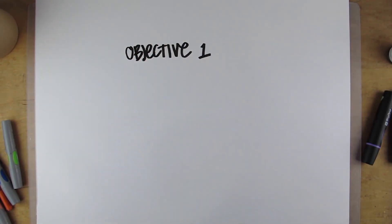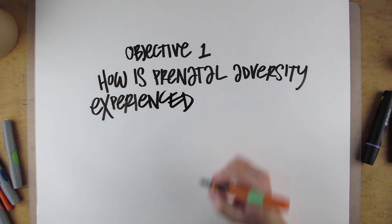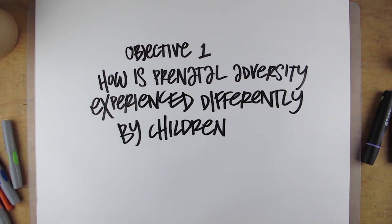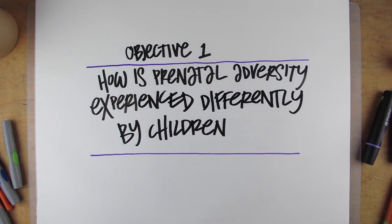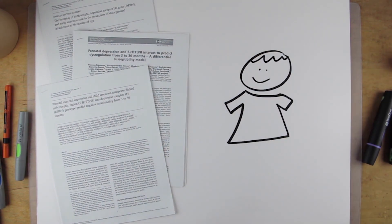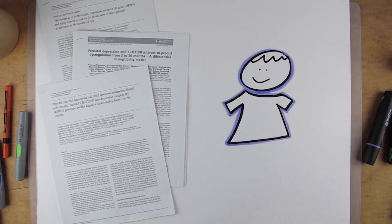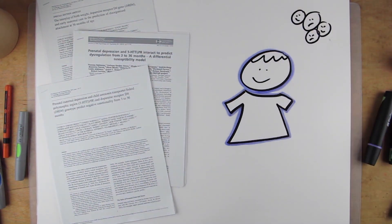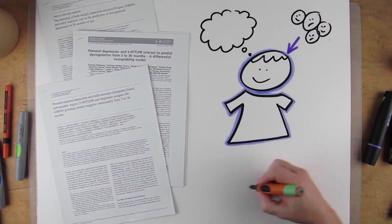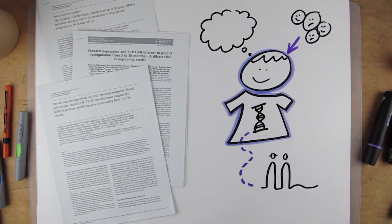The first one is to understand how is prenatal adversity experienced differently as a function of factors that reside in the child, such as their biology, their genetics. For example, in the MAVEN, a study following children from pregnancy to adolescence, it was found that stress during pregnancy influences the child's temperament, attention, and even attachment, depending on the kind of genes the child had.